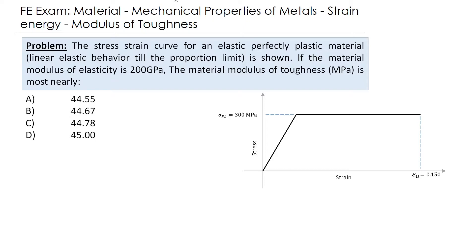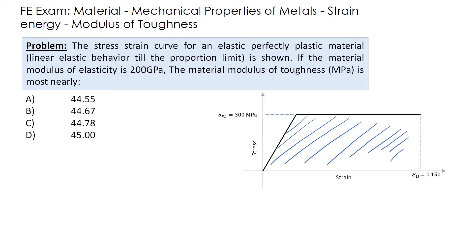When a material is deformed by external loading, it will store energy internally throughout its volume. This energy is related to strains and is called strain energy. Toughness is defined as the resistance to fracture of a material when stressed. The modulus of toughness represents the entire area under the stress-strain diagram — it indicates the strain energy density of the material just before it fractured, meaning it is associated with the ultimate strain.